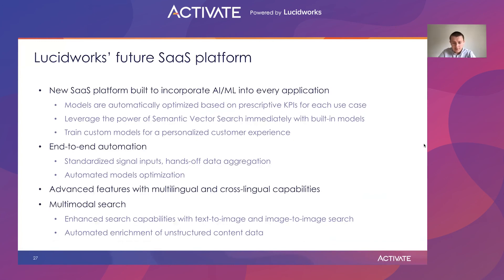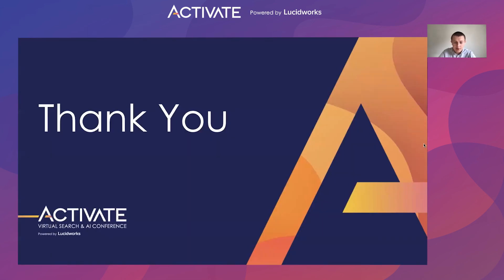As we are building a new SaaS platform, we want to incorporate machine learning into every application. That will allow us to automatically optimize models based on prospective KPIs for each use case, leverage the power of semantic vector search right out of the box with built-in models, and train custom models for a personalized customer experience. We're also working on making it automated end-to-end for a hassle-free experience with standardized data inputs. We also want to expand semantic vector search with advanced features like multilingual and cross-lingual capabilities, and even multimodal search, which will allow us to incorporate additional information like images or structured content. Thank you for attending this presentation — please feel free to reach out with any questions.